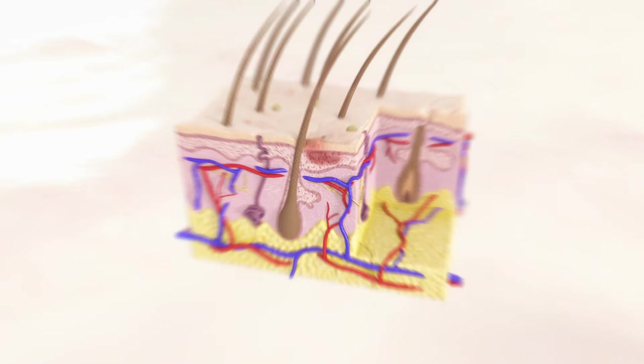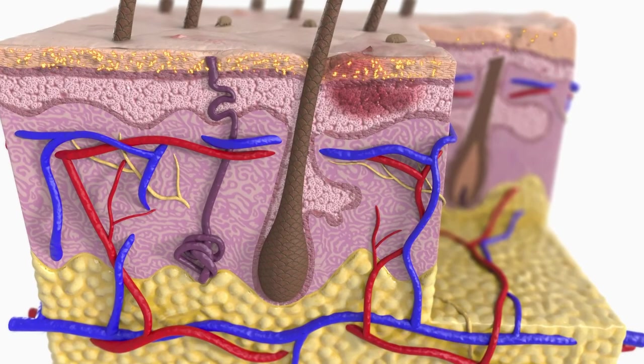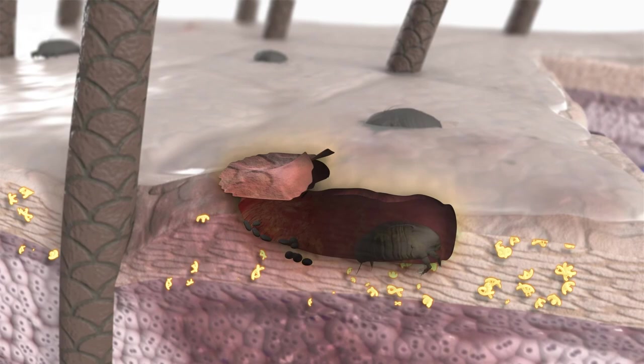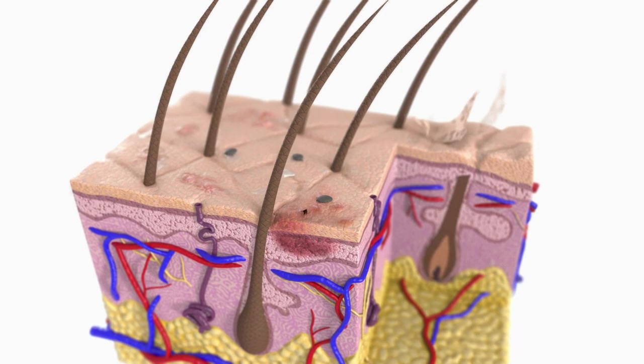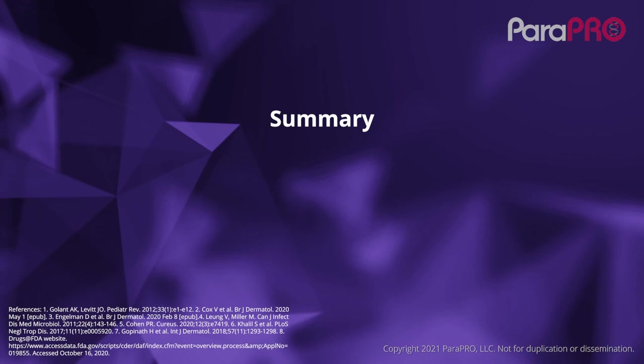The ideal targeted topical therapy for scabies would be a medication that is highly selective and highly effective. It would be absorbed only in the stratum corneum and would subsequently be removed as the epithelium desquamated. It would have a favorable safety and tolerability profile, be convenient for application, and would not promote the development of resistance by the mite.